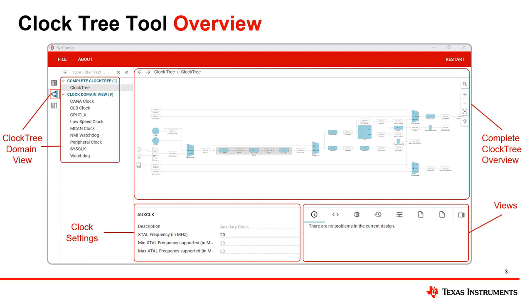On the bottom right, we see the generated code, device view, and changelog, which you may recognize from configuring your hardware in sysconfig.